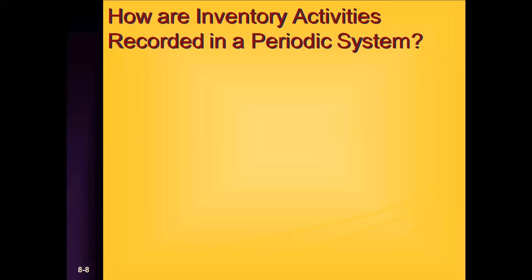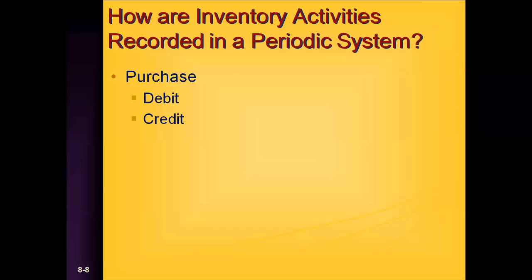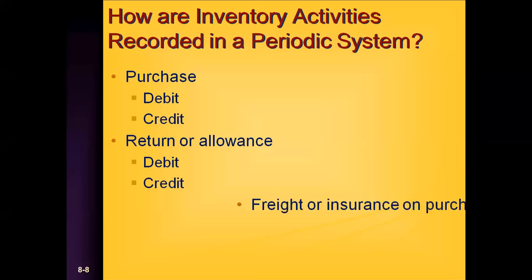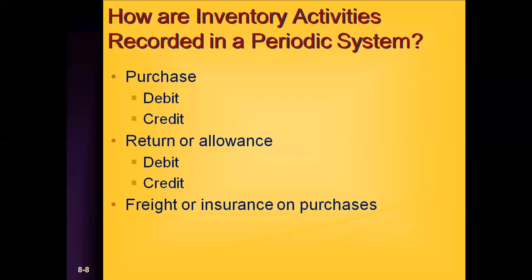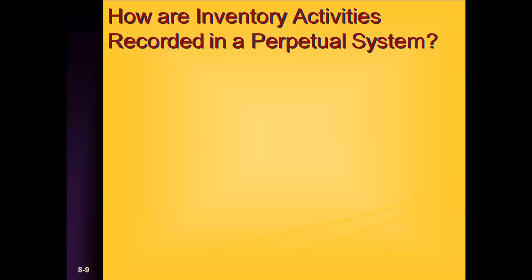How are inventory activities actually recorded in a periodic system versus a perpetual system? Most of the activity in a periodic system occurs in the purchase-related accounts. You would debit your purchases account and credit your accounts payable account for a purchase. For a return or allowance, you would debit your accounts payable account and credit your purchase returns and allowances. For freight costs associated with getting the inventory to you, as well as insurance, you would debit your freight-in costs and/or insurance-in costs and credit your accounts payable.